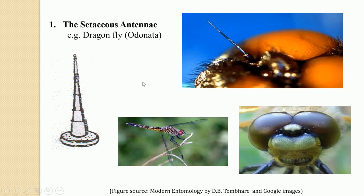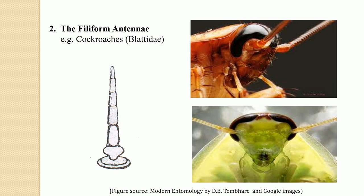The second type is the filiform antennae. Here the flagellum appears like a thread-like structure, and this flagellum is made up of uniformly thin segments — many segments contribute to the formation of the flagellum. Such a kind of antennae is referred to as the filiform antennae. It also has the basal segment known as the scape, the second segment known as the pedicel, and then the flagellum made up of many uniformly thin segments. This type is well evident in cockroaches belonging to the family Blattidae.